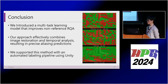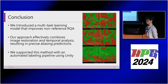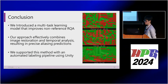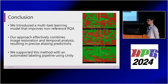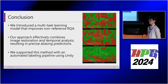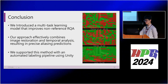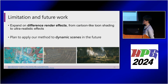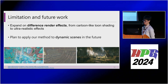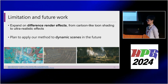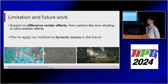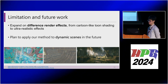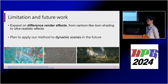In conclusion, we introduced a multitask model that improves non-reference RQA tasks by combining temporal information and reconstruction for better results. We also proposed a labeling pipeline for training and evaluation. Our work is currently limited to the same rendering effects; we plan to expand to different effects like thin shading or photorealistic effects, and aim to test dynamic scenes in the future.